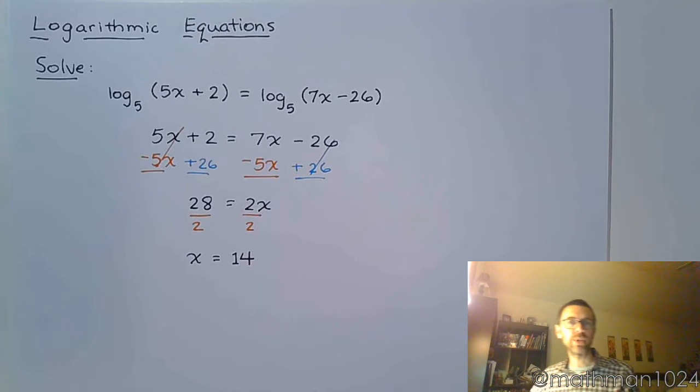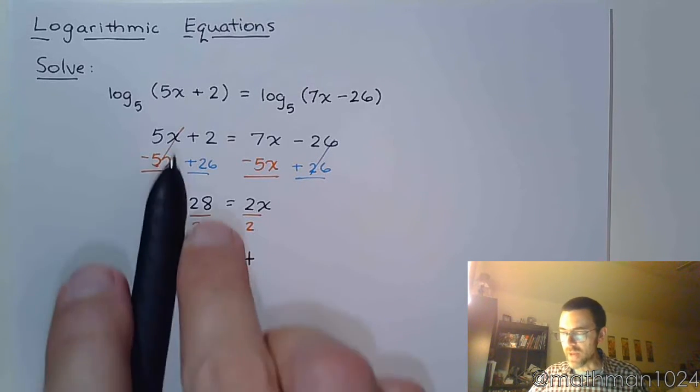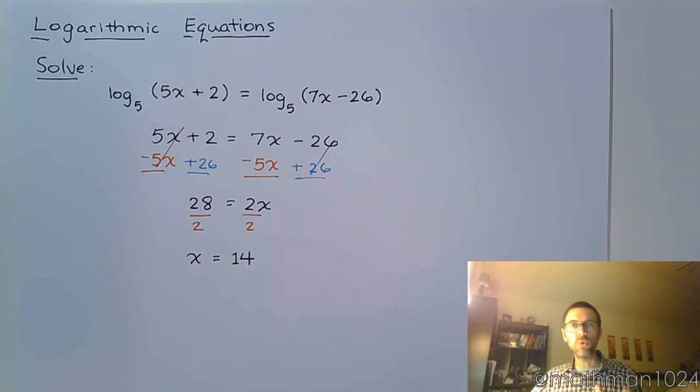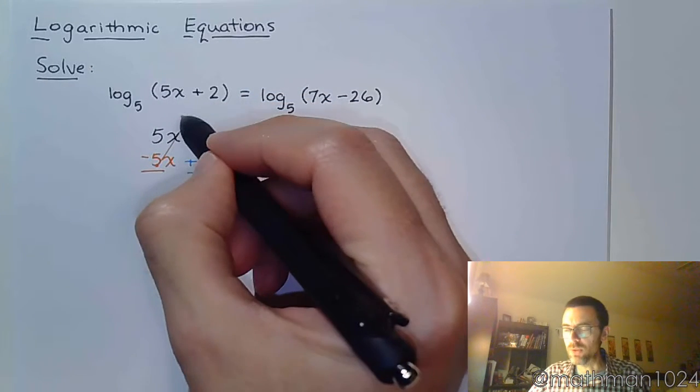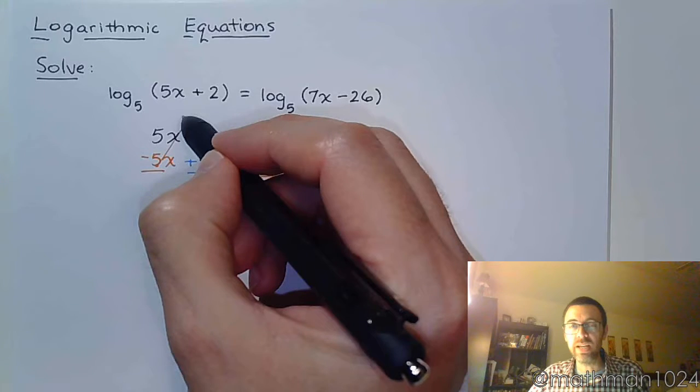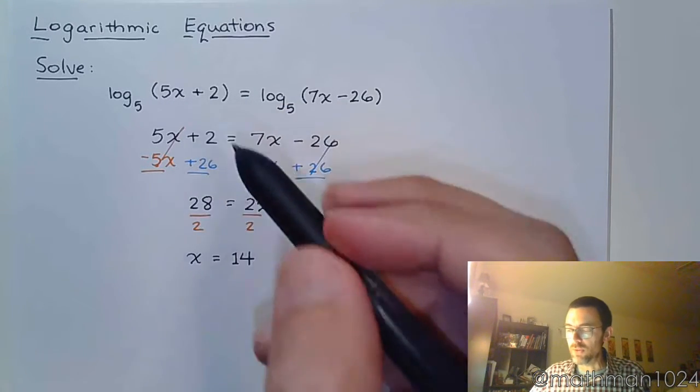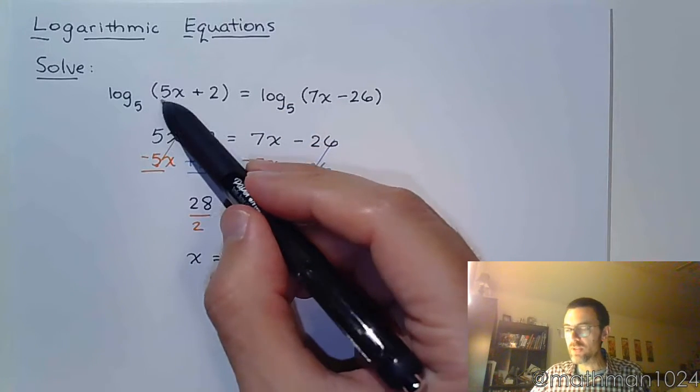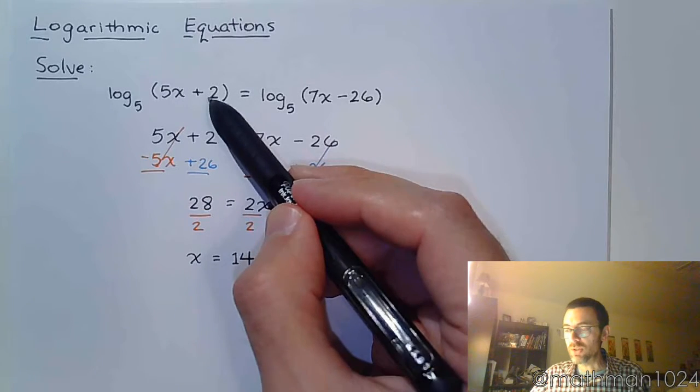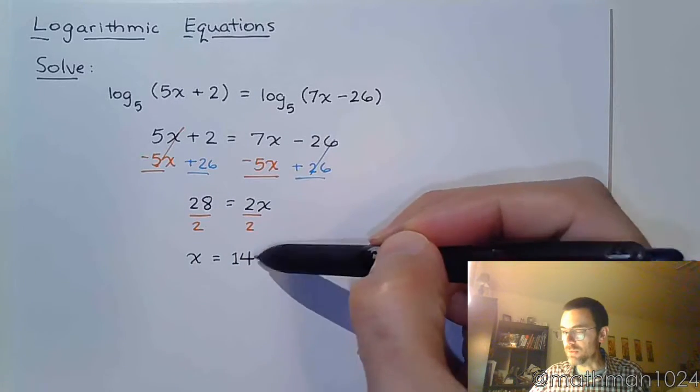You've got to be careful about these logarithmic equations. Just because you get an answer doesn't mean that it works out. You have to be able to plug this back in up here and avoid any kind of issues. Because remember with logarithms, you can't have an input value that's going to make this guy negative. So if I plug in 14, 5 times 14 is 70, plus 2 is 72. If I plug in 14 here, 7 times 14 is 98.